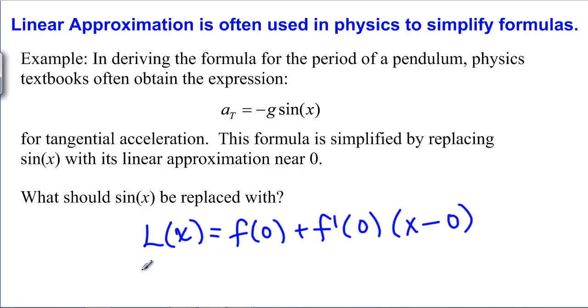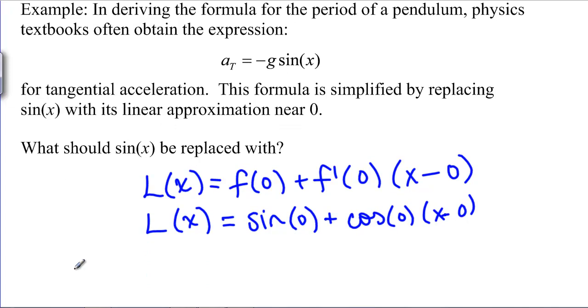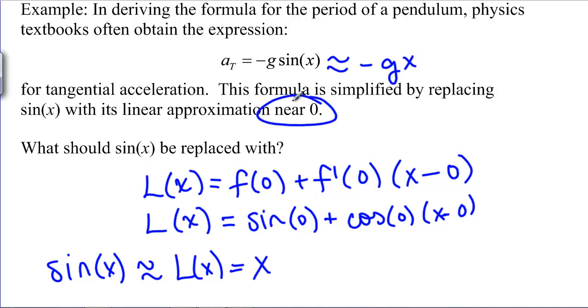What is the linear approximation of sine of x near zero? The linear approximation is of course F of zero plus F prime of zero times X minus zero. What does that mean? For sine that would mean L of X is equal to sine of zero plus what's the derivative of sine? It's cosine of zero times X minus zero. Sine of X is approximately equal to its linear approximation which is sine of zero is zero plus cosine of zero is one times X minus zero. It's just X. Sine of X is approximately X. They take this formula and instead of making you work with sine all the time, they just have you work with negative g times X which is much easier to do calculations with. This is the power of this method is that as long as you're plugging in numbers that are near zero, you can use a much simpler formula.